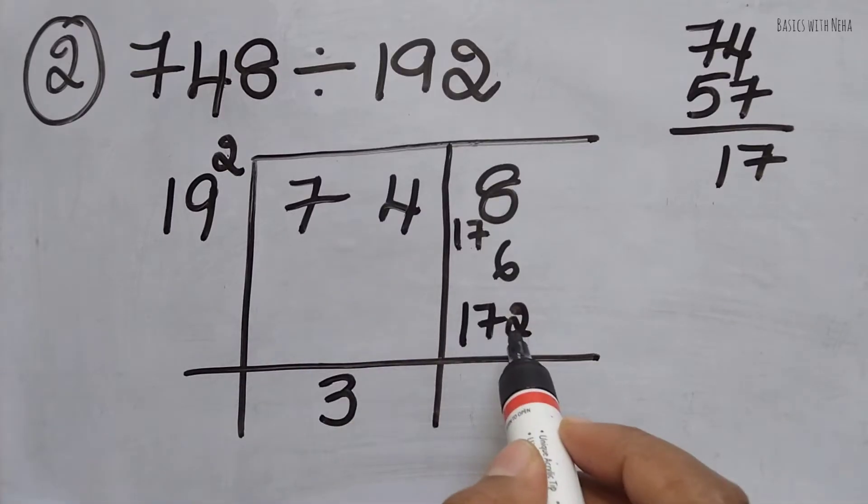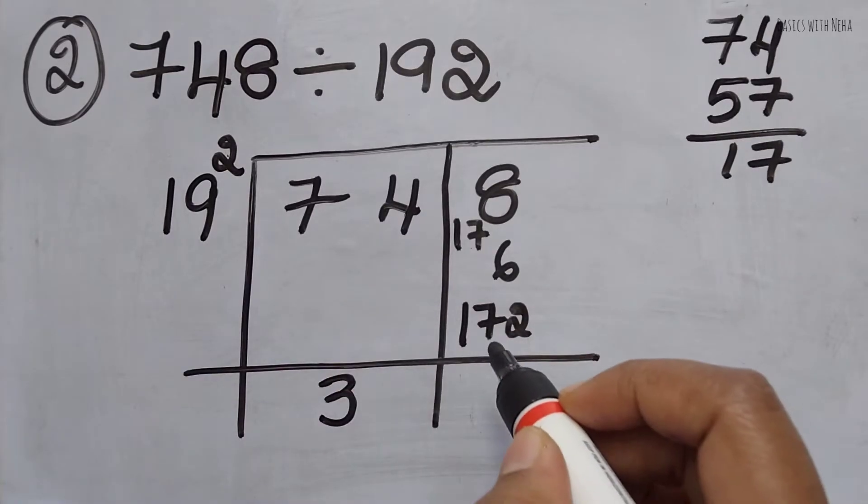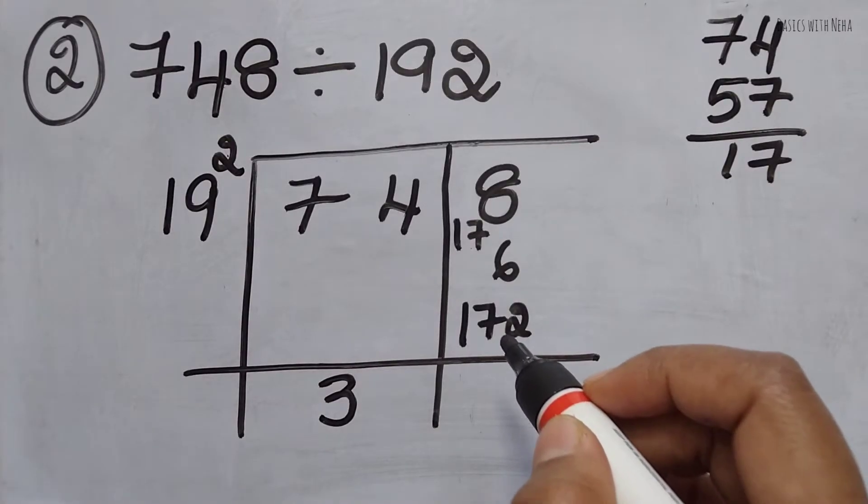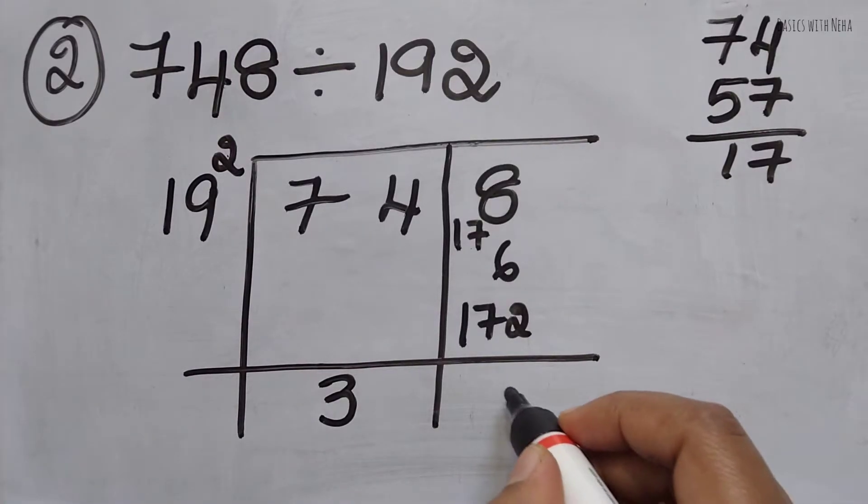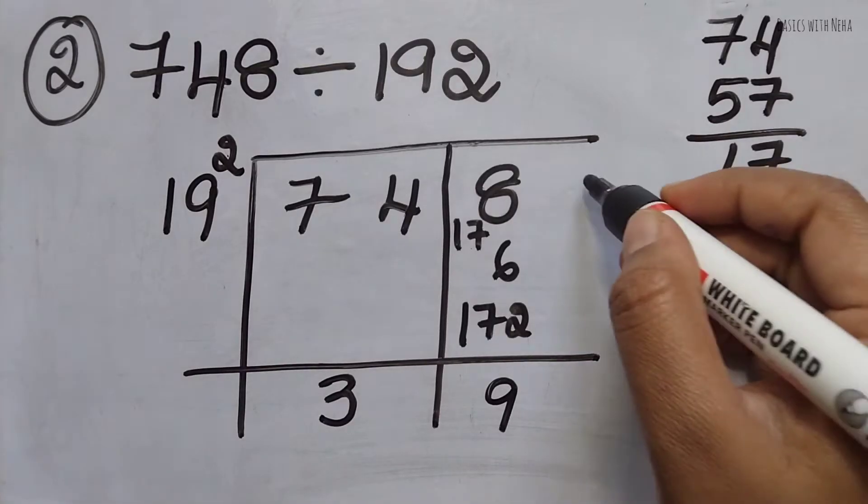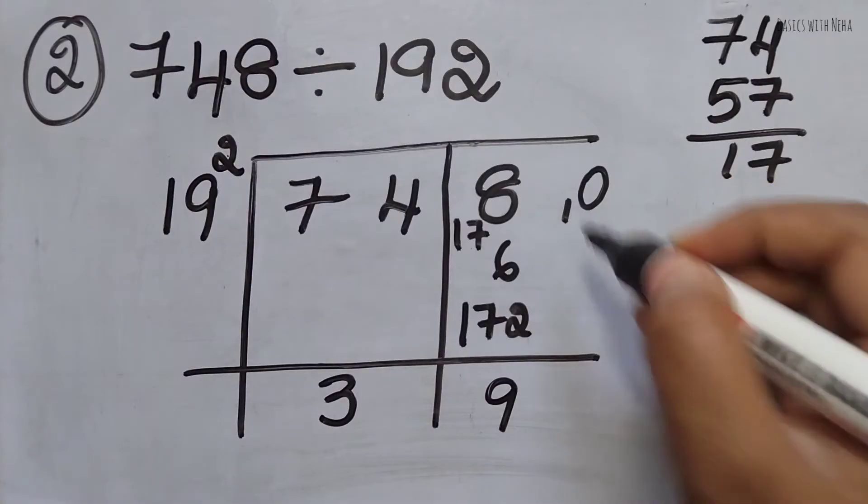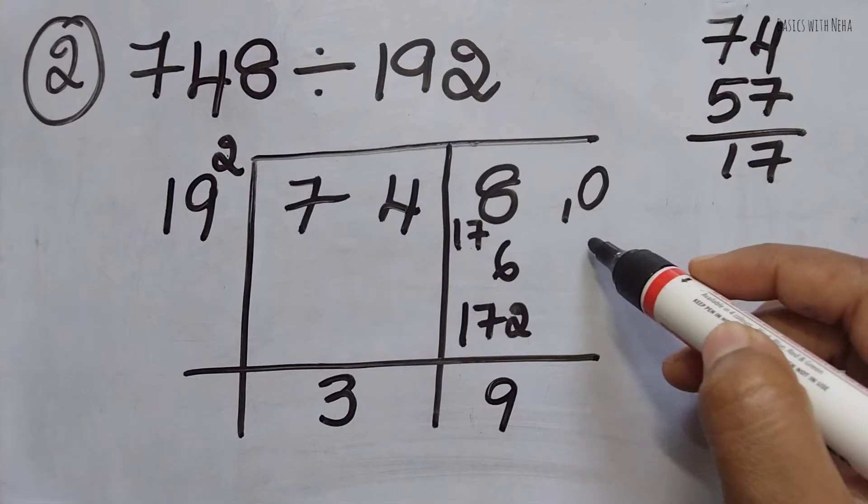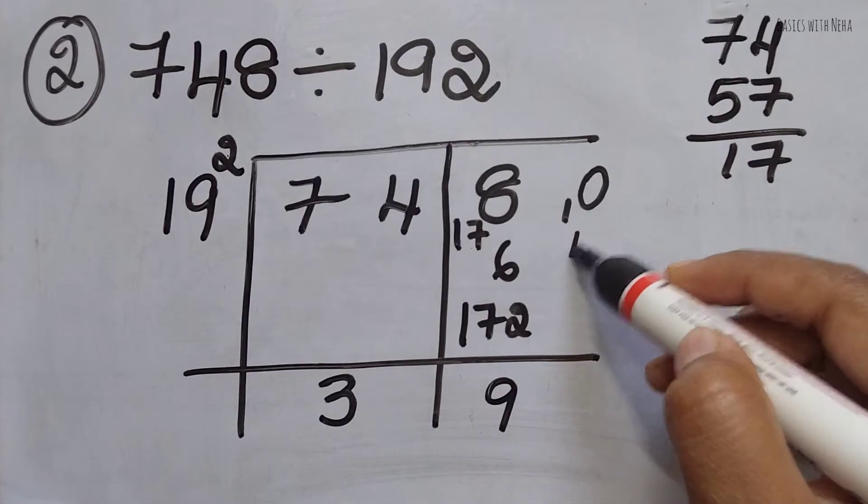Now this is the new dividend. 19 goes how many times to get 172? If we do 19 times 9, it's 171. So if I take 19 times 9, that's 171. 1 will be the remainder, so if I have 0 and put 1, it'll be 10.